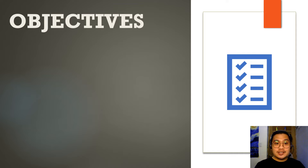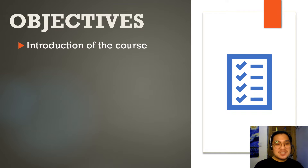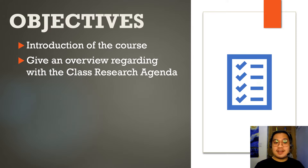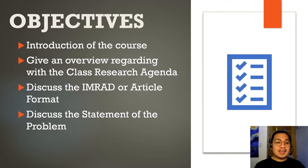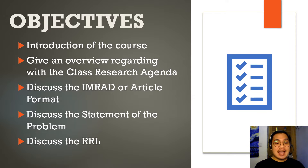Here are the objectives of our lesson. The first objective is the introduction of the course. Second, give an overview regarding the class research agenda. Third, discuss the IMRAD or article format. Fourth, discuss the statement of the problem. And lastly, the discussion about the review of related literature.